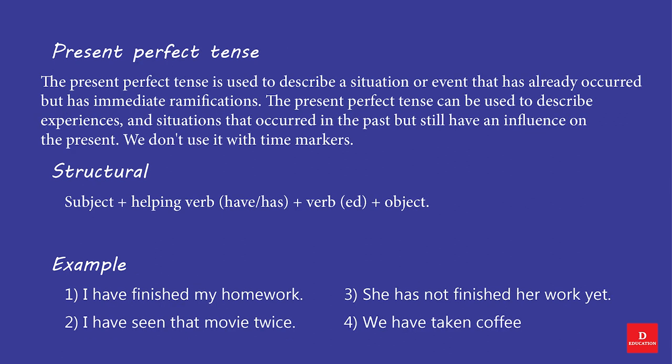Present Perfect Tense. The Present Perfect Tense is used to describe a situation or event that has already occurred but has immediate ramifications. It can also describe experiences and situations that occurred in the past but still have an influence on the present. We don't use it with time markers.